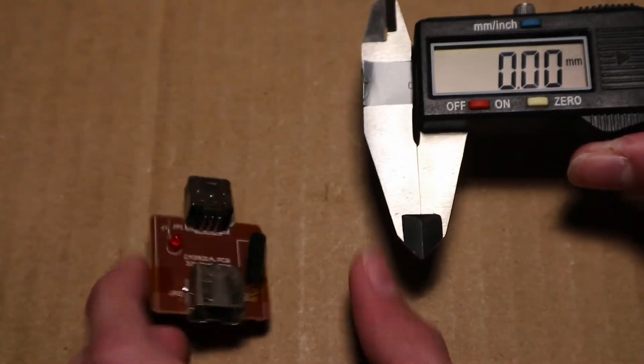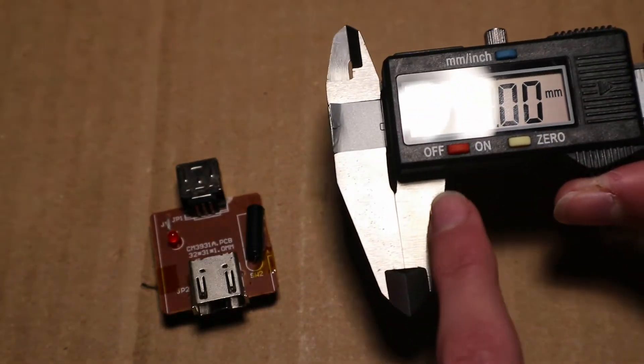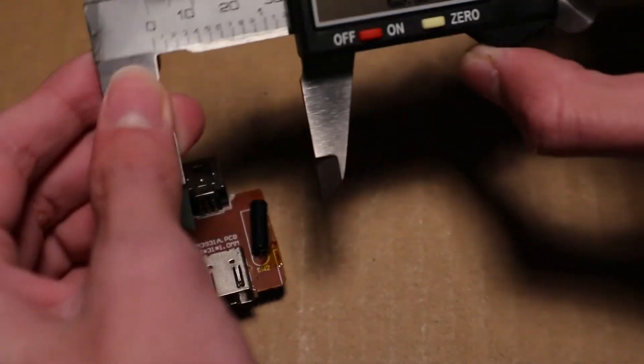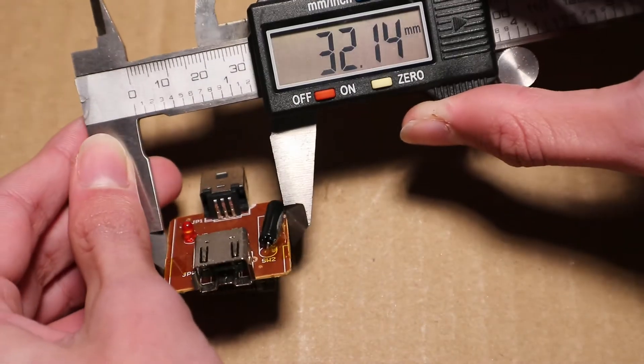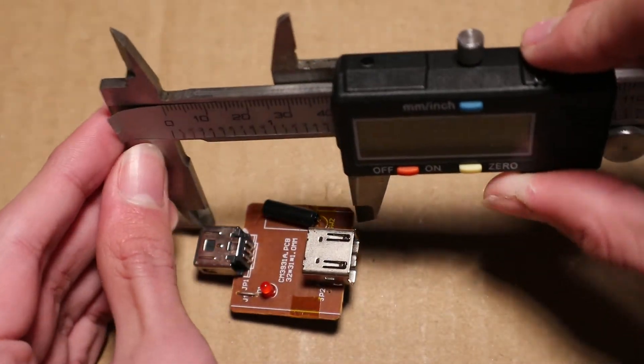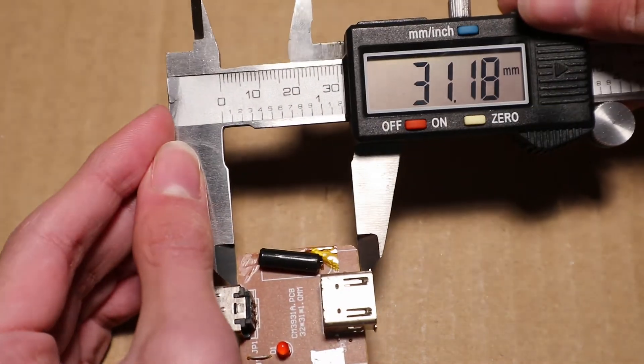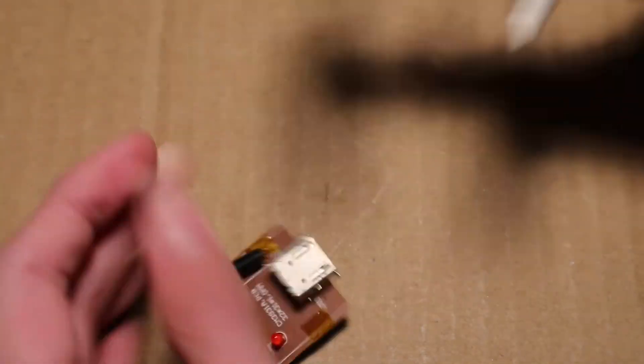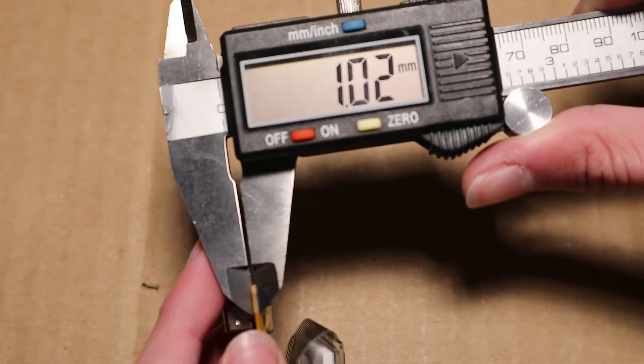Now I will try measuring the dimensions of this circuit board using this. 32.1 millimeters, 31.18, and then 1.02 millimeters.